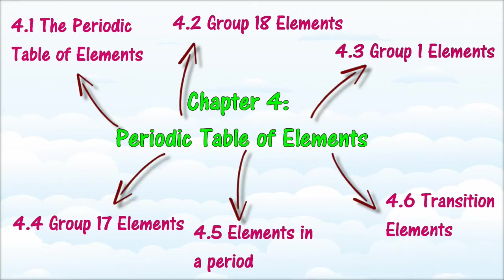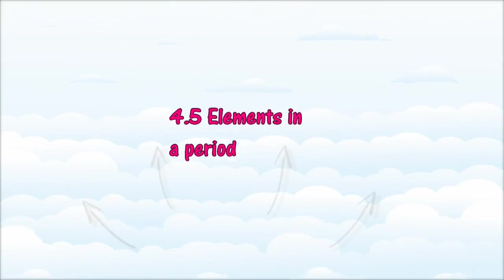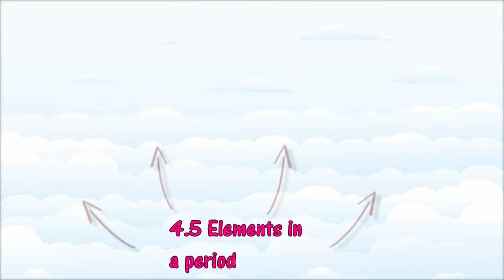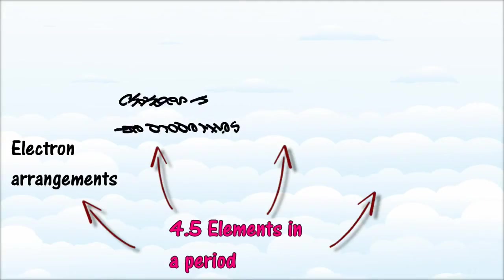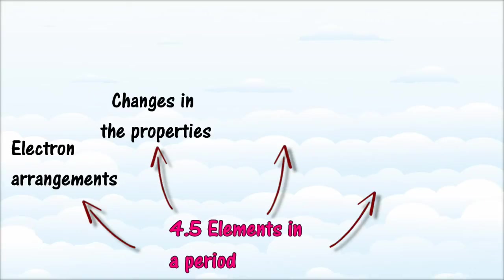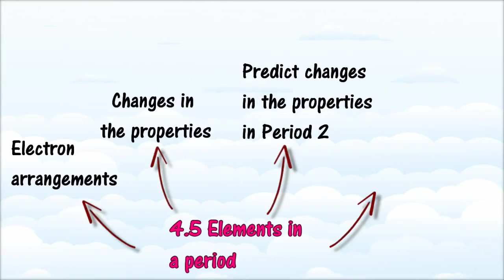In section 4.5, we will learn about elements in a period. At the end of this section, you should be able to list all elements in Period 3, write electron arrangements of all elements in Period 3, describe changes in the properties of elements across Period 3, state changes in the properties of the oxides of elements across Period 3, predict changes in the properties of elements across Period 2, and describe uses of semi-metals.